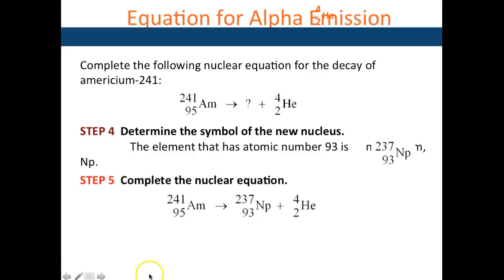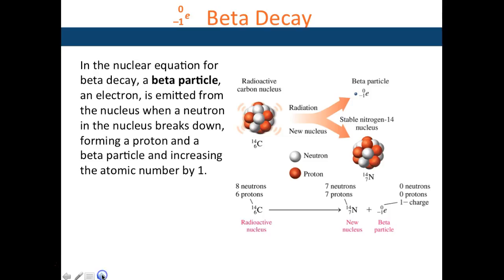In a beta decay, the new element is one place to the right of the original element. That's because if you look at how to balance an equation which undergoes beta decay, 7 minus 1 is 6, and the mass remains the same.